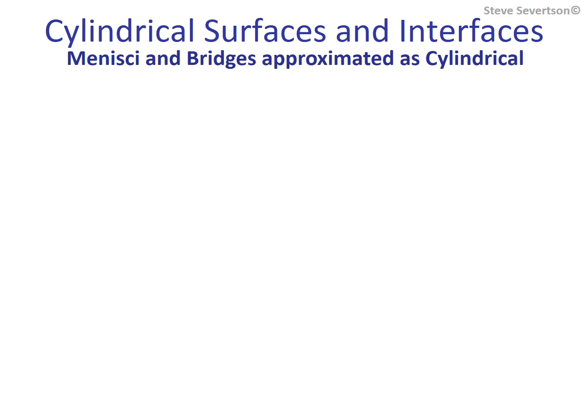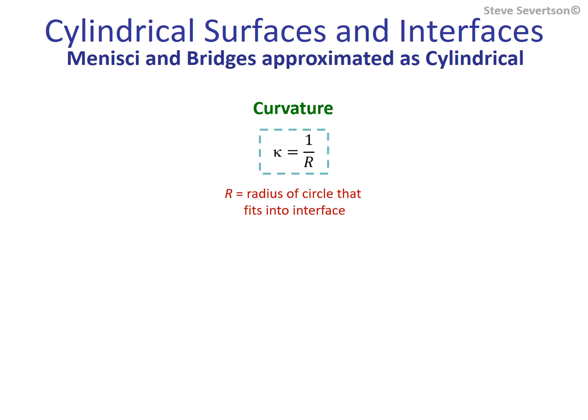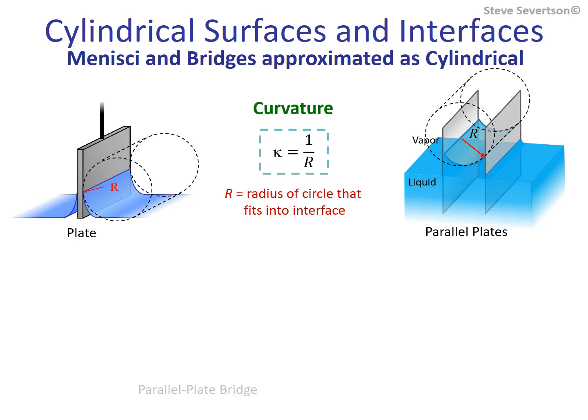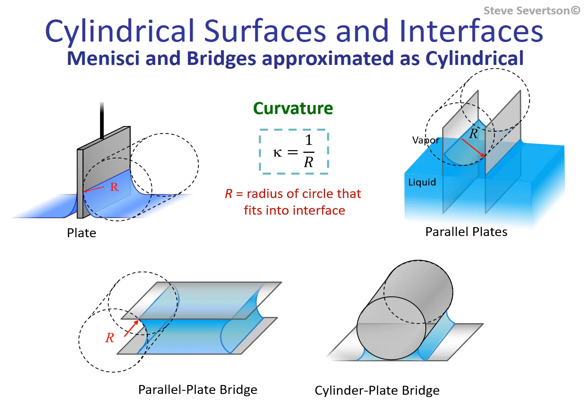Moving on, we consider a second basic shape, a cylinder with a radius R. The curvature of cylindrical surfaces and interfaces is found to be 1 over R. Examples where surfaces and interfaces can be approximated as being cylindrical include menisci that form on the surfaces of vertical plates, for example in the Wilhelmi plate measurement, and menisci that form between parallel plates resulting in capillary rise and fall.